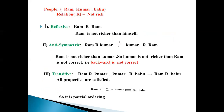Let us see some examples. Given the set of people: Ram, Kumar, Babu. The relation is 'not richer than'. Reflexive: Ram is not richer than himself. Antisymmetric: Ram is not richer than Kumar, but Kumar is not richer than Ram is not correct — that backout is not correct because it is antisymmetric. Transitive: Ram not richer than Kumar, Kumar not richer than Babu, so Ram is not richer than Babu. All properties are satisfied, so it is a partial ordering.